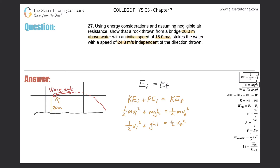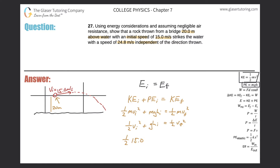Now I need to find the final velocity. I know the initial speed is 15 meters per second and the height is 20 meters. When you do problems from an energy perspective like this, you don't care whether the velocity vector is in the x or y direction — that's the beauty of it compared to kinematics, where you had to worry about which frame you were in.